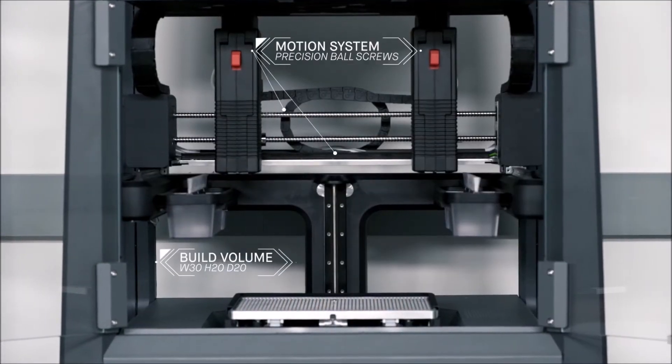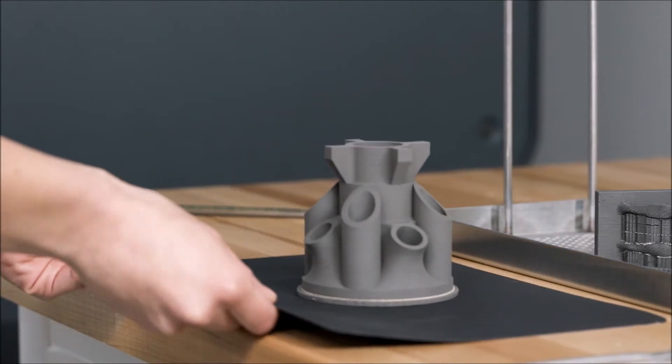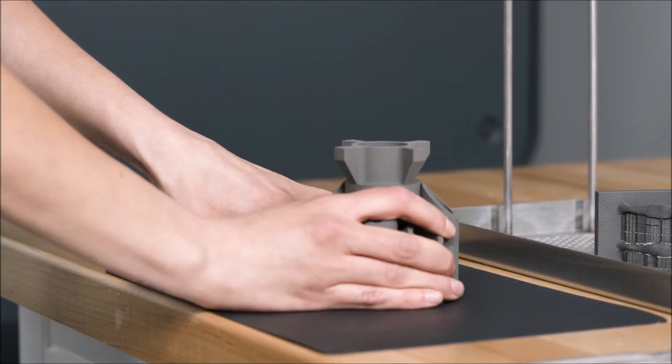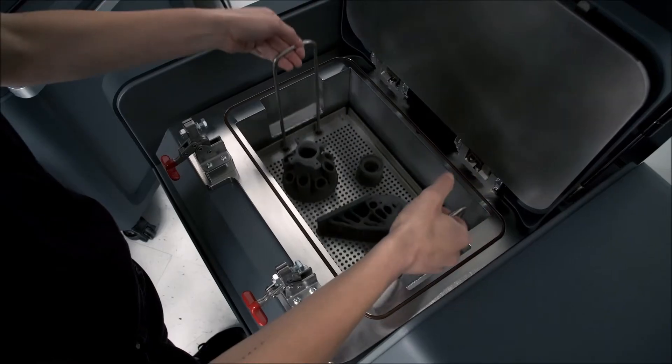Once the print is complete, the vacuum disengages and the print sheet and part are easily removed from the printer. The flexible sheet is designed to allow for easy removal of the part without damaging it during transfer.